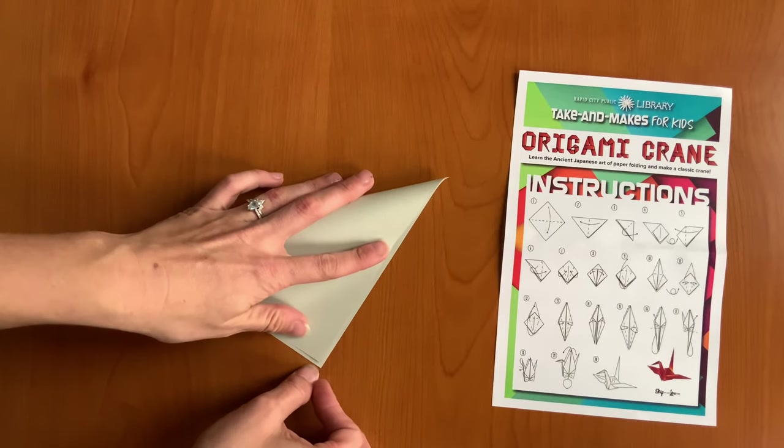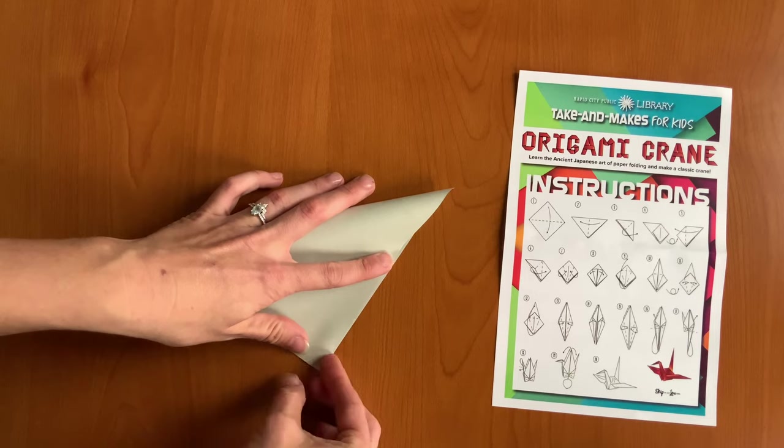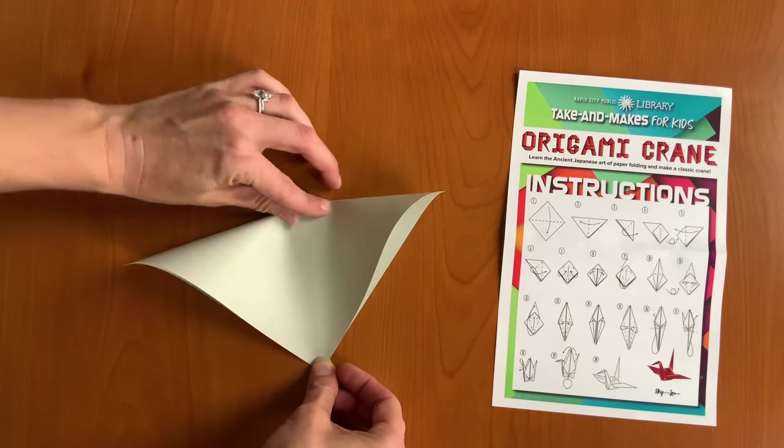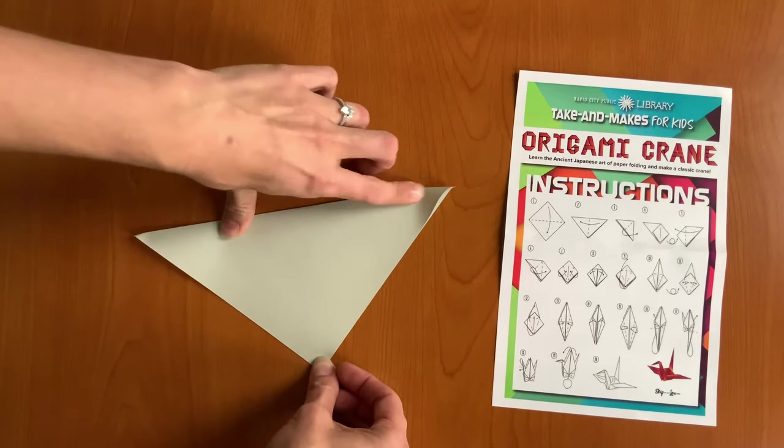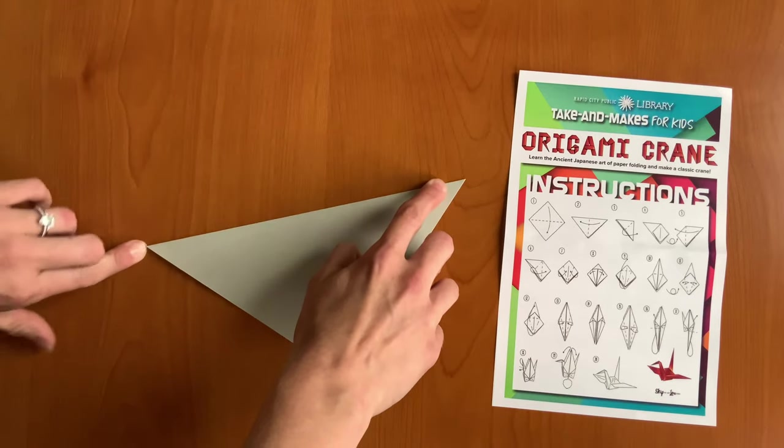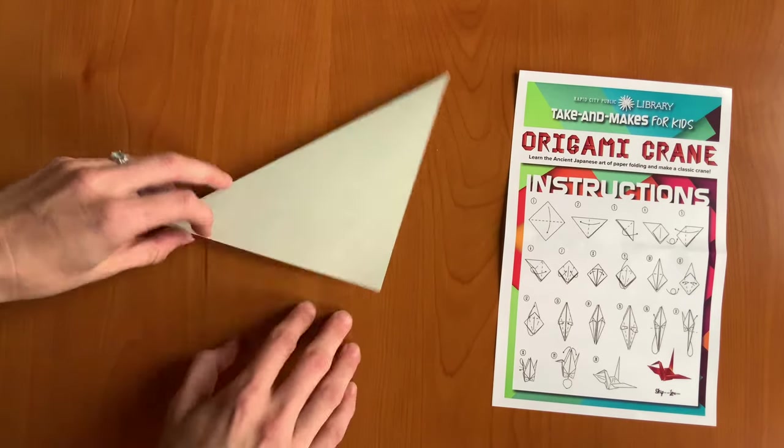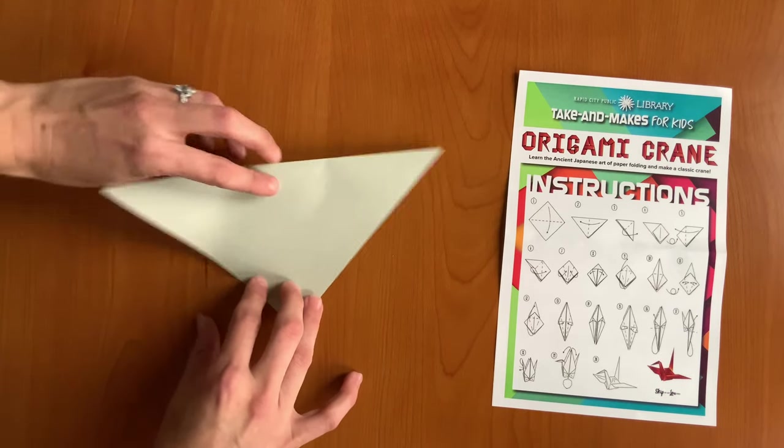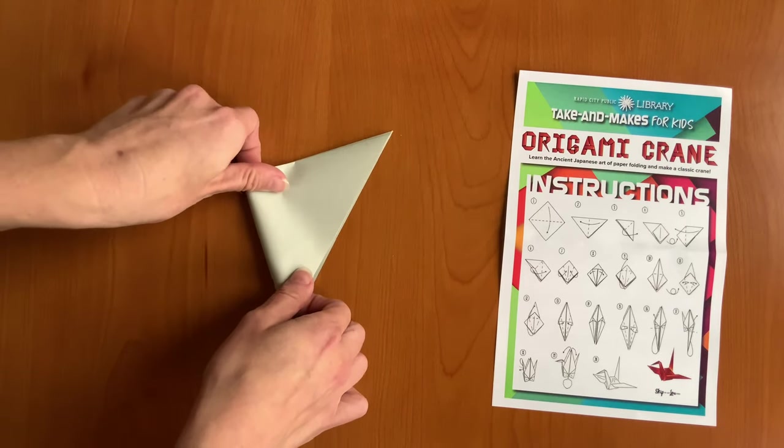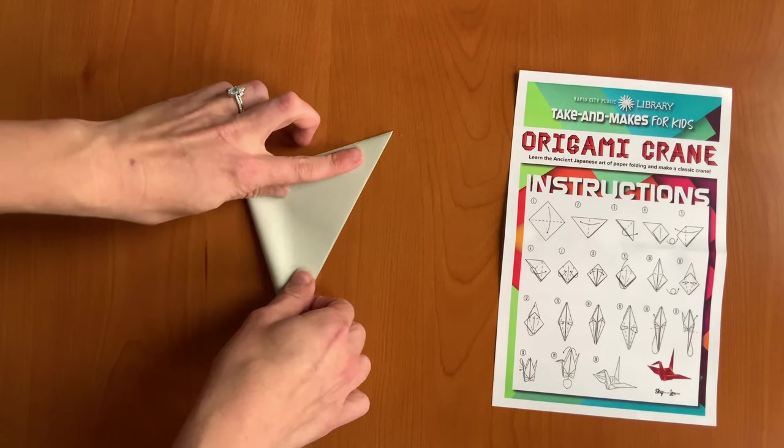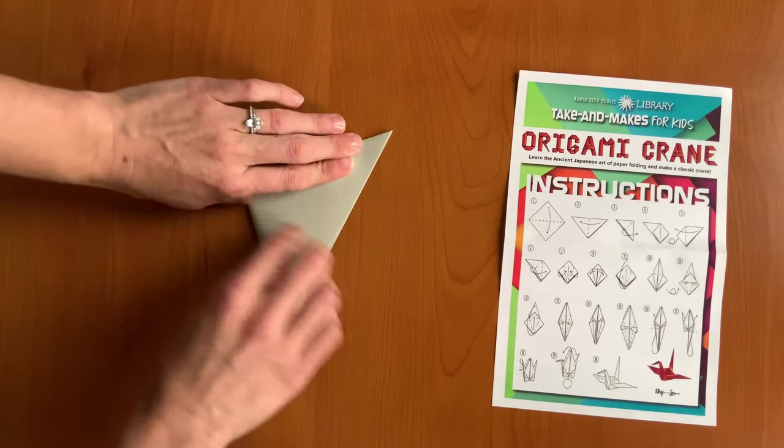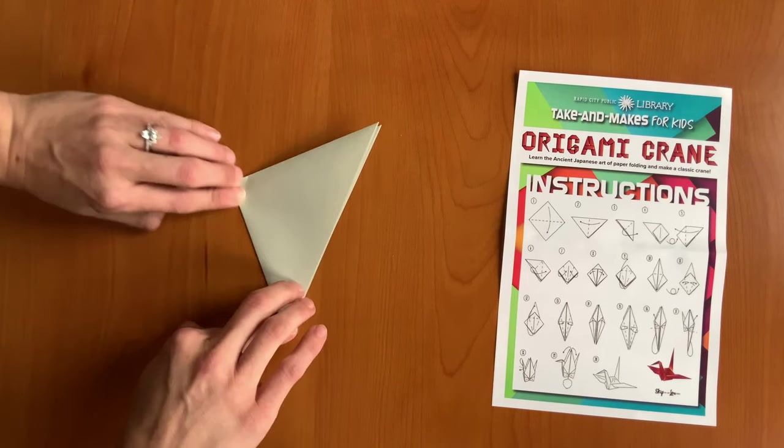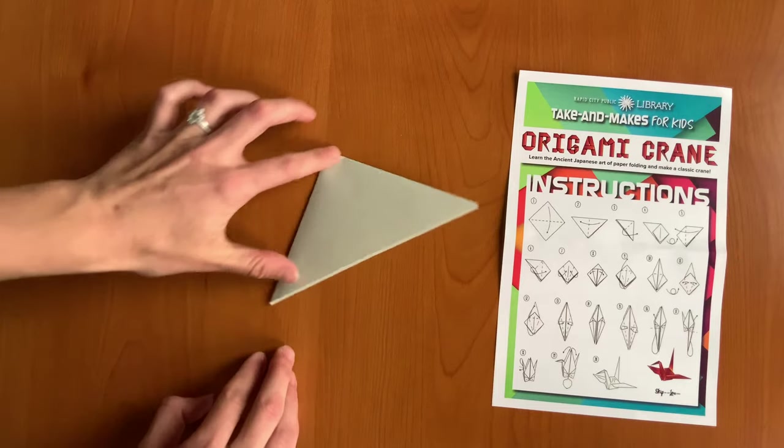And when you're folding, you want to try and get it as perfect as possible, because we are going to be making a lot of folds. Good job. Next we're going to fold the left corner over to the right corner.